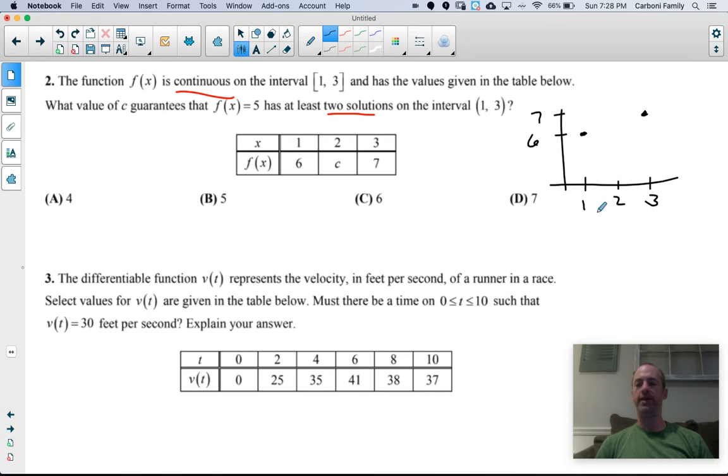The point at X equals 2, we're not sure, but I want the function to equal 5 two times. So I need to cross that Y value twice, and the only value that's going to force me to do that is 4. If I plot a point at 2, 4, that is the only one of these four options where if I connect these with a continuous function, I'm going to have to hit a Y coordinate of 5 twice. And that is your intermediate value theorem.